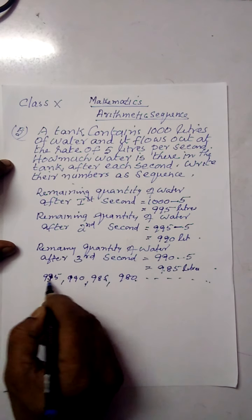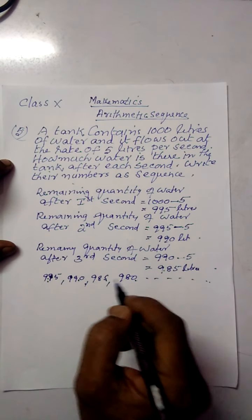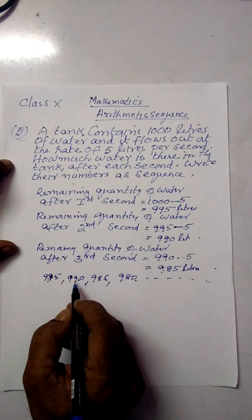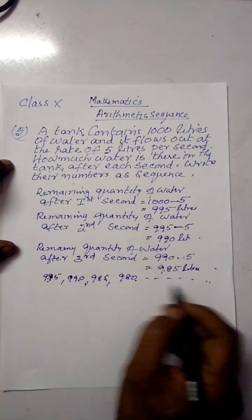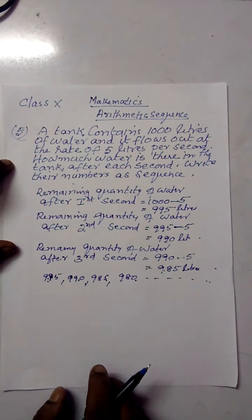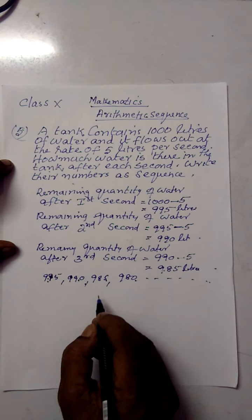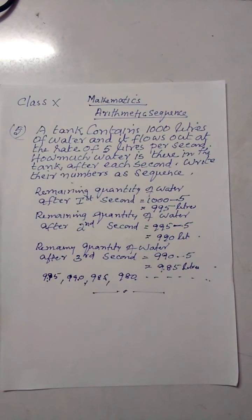The sequence decreases. The answer is 995, 990, 985, 980 — a decreasing arithmetic sequence. Okay, thank you.